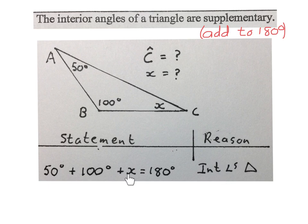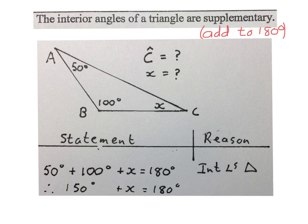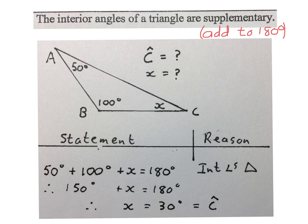Now we solve for X using normal equations. 50 plus 100 is 150, plus X equals 180. Then we subtract 150 degrees from both sides. Our final answer is X equals 30 degrees. That's also the value of angle C, which you can fill in on the sketch. Please stop the video and get your head around this solution.